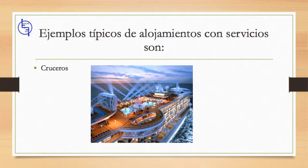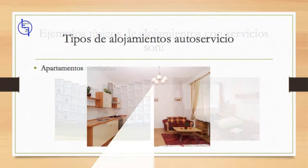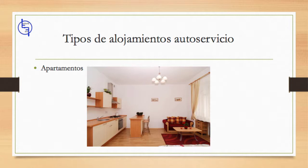Un crucero es un gran barco como un hotel, donde las personas viajan por placer. Un salón de residencia de la universidad es un edificio que proporciona dormitorios y residencias para un gran número de personas. Los apartamentos, también conocidos como pisos, son una unidad de alojamiento independiente ubicados en un edificio que contiene varias de estas unidades.